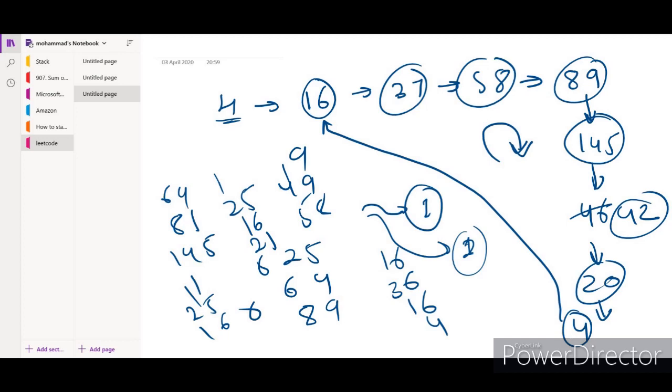We can either use a set here or hashmaps to store the numbers which we have already encountered. If a number appears again, then we can return false in those cases.